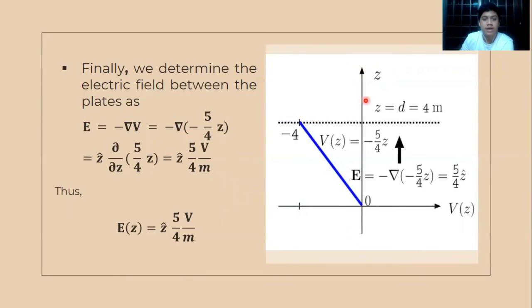Finally, this diagram shows we have determined the electric field between the plates as E(z) = ẑ(5/4) volts per meter.